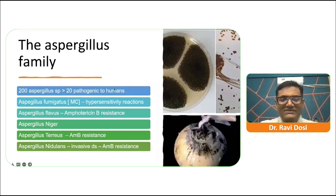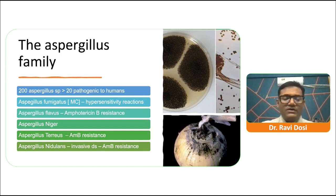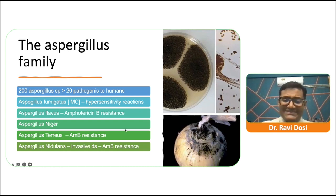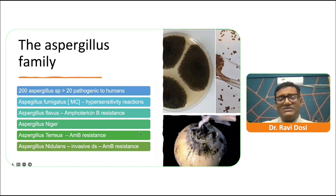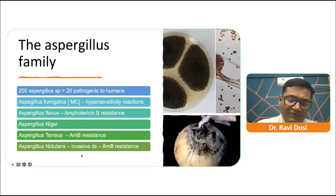The aspergillus family comprises almost 200 species, of which more than 20 are pathogenic to humans. Aspergillus fumigatus is the most common species causing hypersensitivity reactions. Aspergillus flavus and Aspergillus terreus are known for amphotericin B resistance. Aspergillus niger is the familiar black mold seen on onions. Aspergillus nidulans is infamous for causing invasive disease and is also amphotericin B resistant.